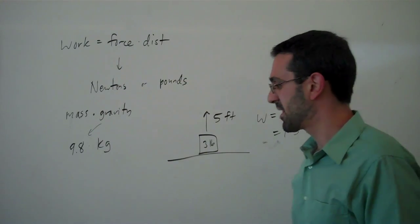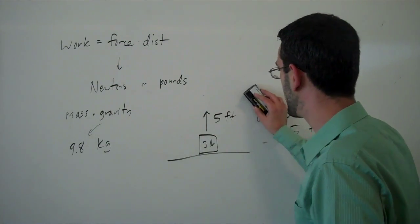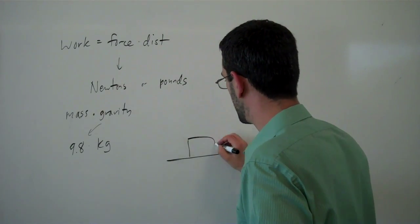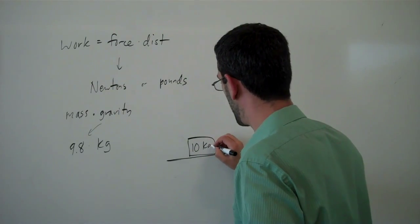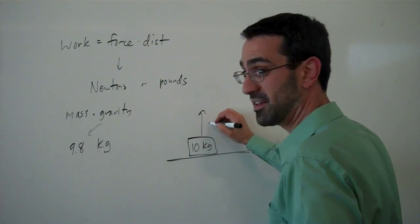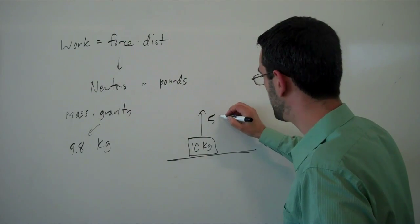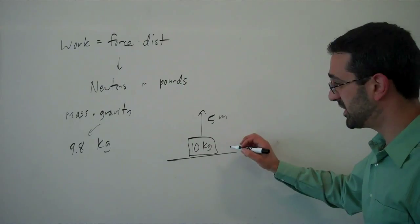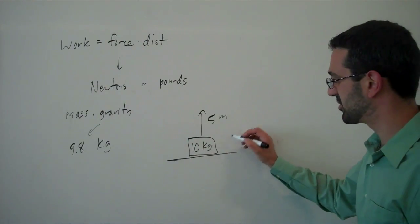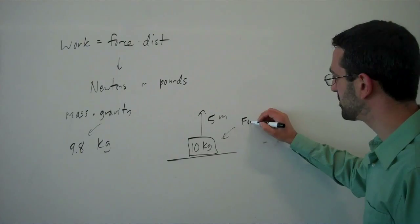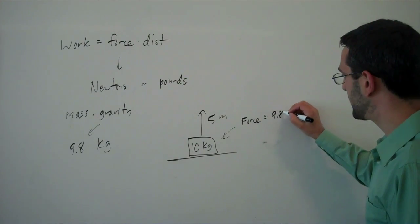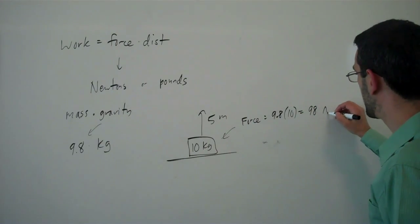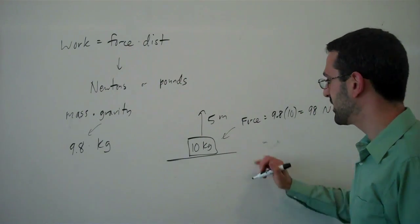Similarly, if I had a 10-kilogram mass and I wanted to lift it five meters, well now we would need to find first the amount of force being exerted due to gravity here. So the force would be 9.8 for gravity times 10 kilograms, which would be 98 Newtons of force.